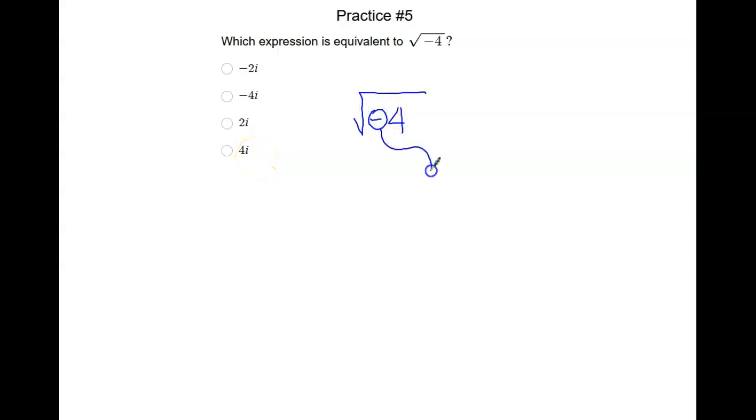The negative sign is what turns into the imaginary number. Remember, i is the square root of negative 1, telling us that we've taken the square root of a negative number.